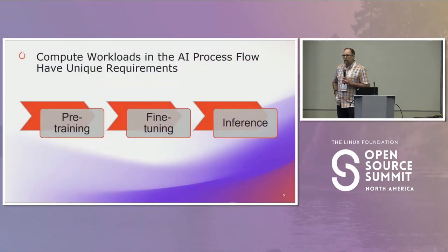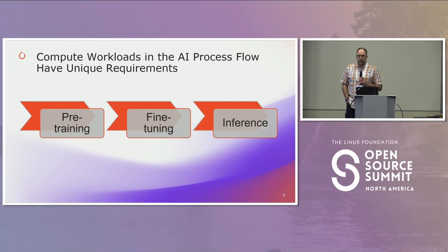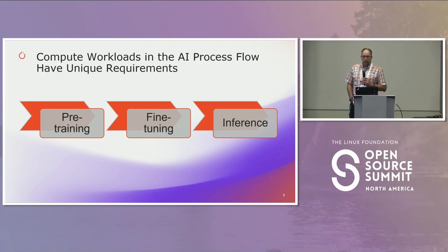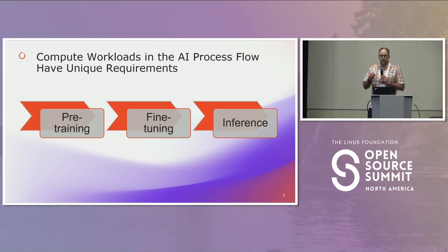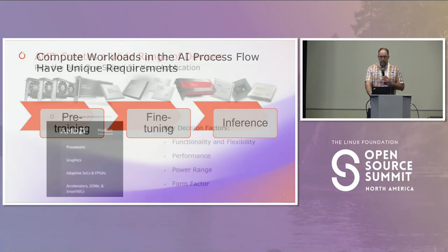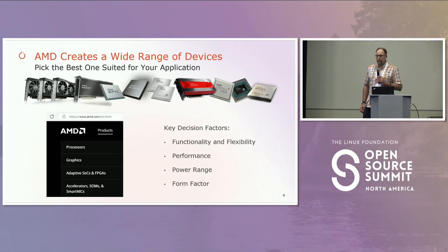In the machine learning flow, there are different amounts of compute required for different components. In pre-training it's really intense — a large number of servers, many GPUs or other accelerators, and a large amount of data. For fine-tuning there are many ways to reduce the data required and you want to iterate quickly. On the inference side it comes down to latency and throughput — how fast can you respond. Through all these use cases you have different hardware requirements, and AMD has a large suite of devices from small CPUs to large accelerators.